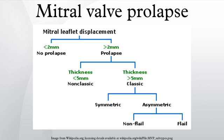Signs and symptoms — Murmur: Upon auscultation of an individual with mitral valve prolapse, the mid-systolic click followed by a late systolic murmur heard best at the apex is common. In contrast to most other heart murmurs, the murmur of mitral valve prolapse is accentuated by standing and Valsalva maneuver and diminished with squatting. The only other heart murmur that follows this pattern is the murmur of hypertrophic cardiomyopathy. Hand grip maneuver increases total peripheral resistance and therefore increases back pressure on the mitral valve, resulting in a more intense murmur.